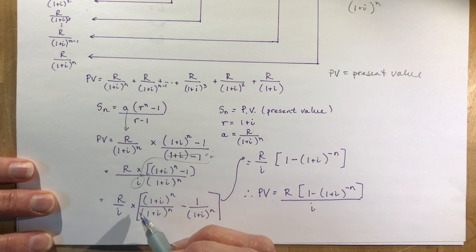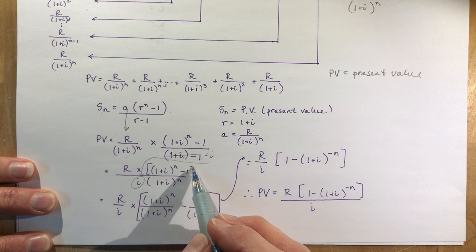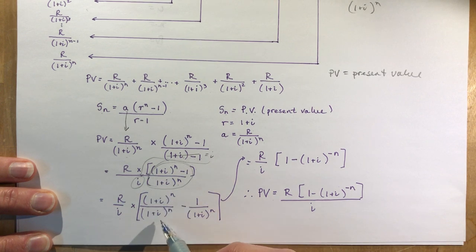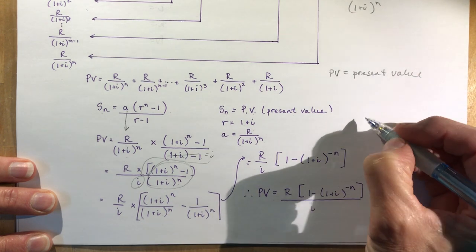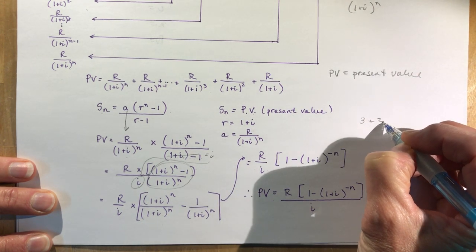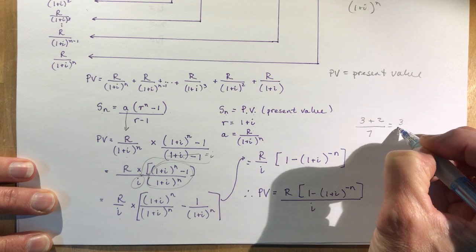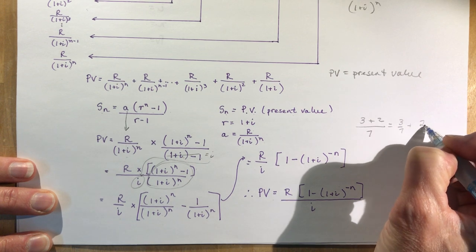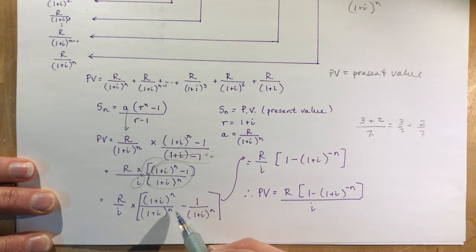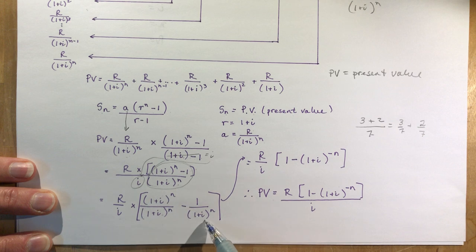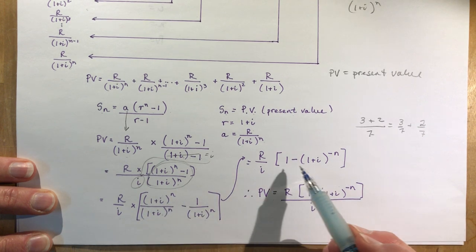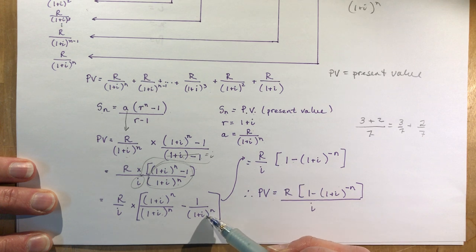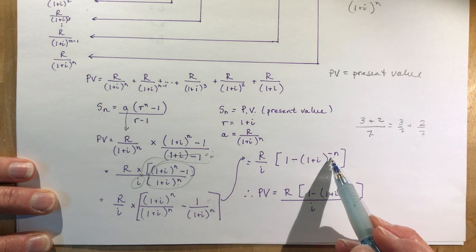When you have any fractions you can break them into parts. So I have R/i and then I have this part which I broke into two parts. That would be like me saying what's 3 plus 2 over 7 and you'd say that could be written as 3/7 plus 2/7. So that's all I've done here. I broke this into two parts, this over this minus 1 over this.